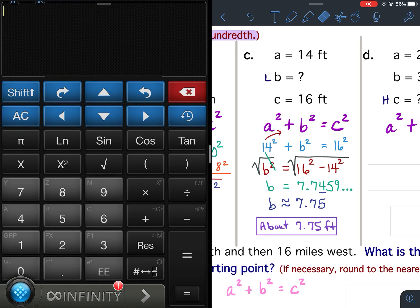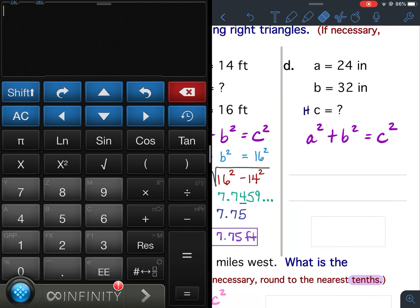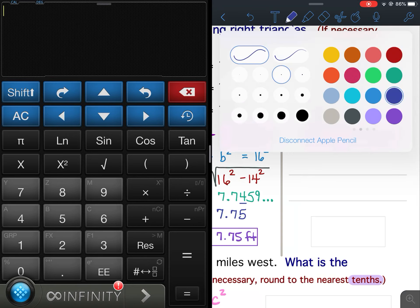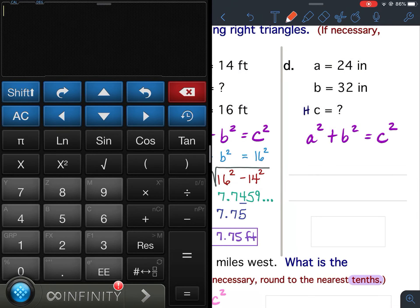All right. Example D. We're solving for the hypotenuse again. So we have a is 24. So 24 squared. b is 32. So plus 32 squared equals the hypotenuse, which we don't know. So c squared.